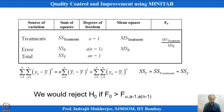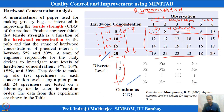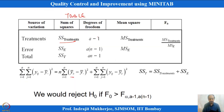The ANOVA table contains SS treatment, which represents the variation of each label average from the grand average (y double-dot bar). SS treatment is calculated as the sum of squared differences between each label average and the grand average, weighted by the number of replicates.